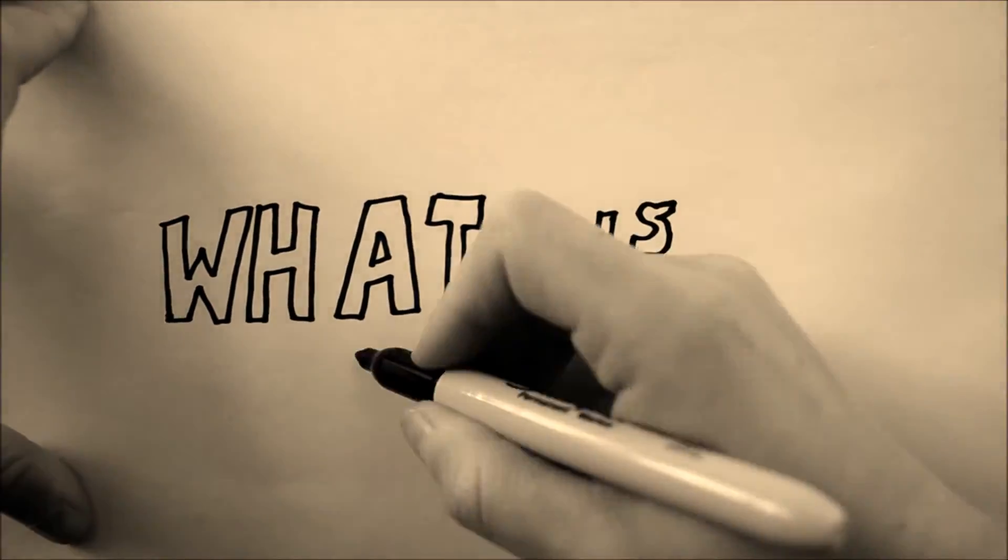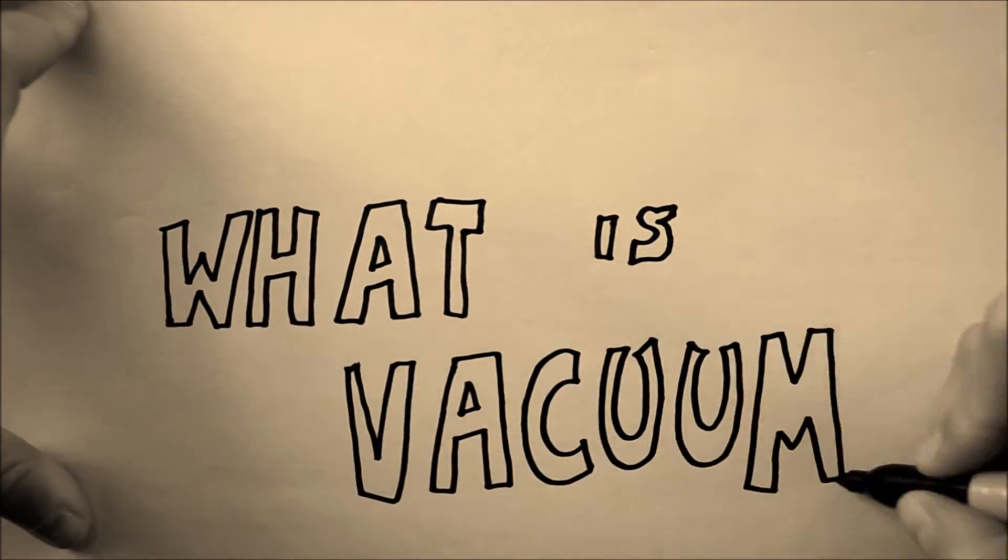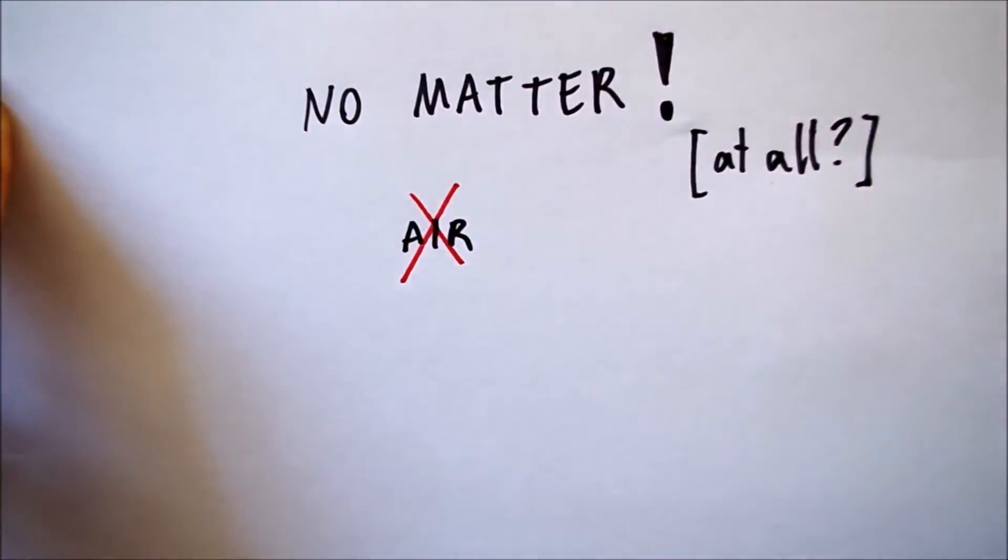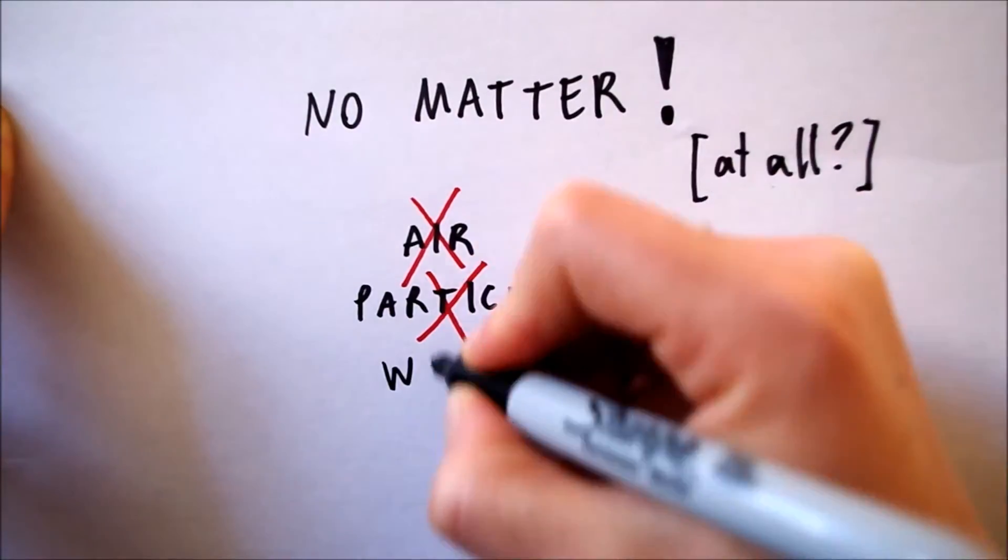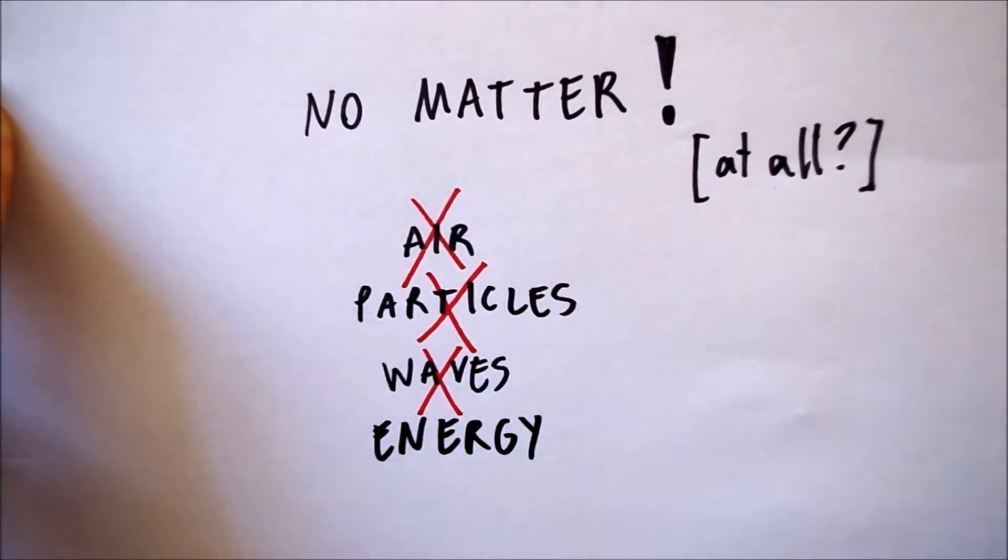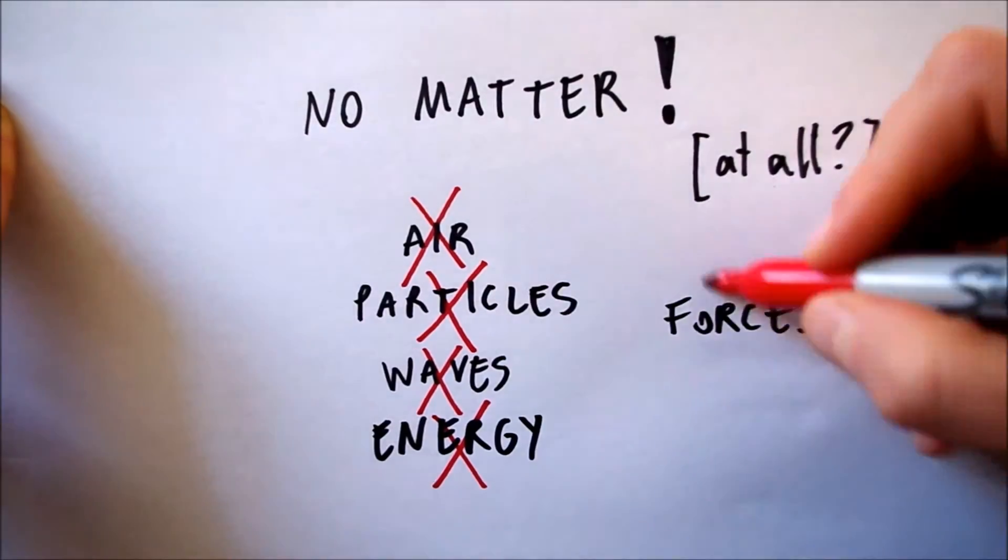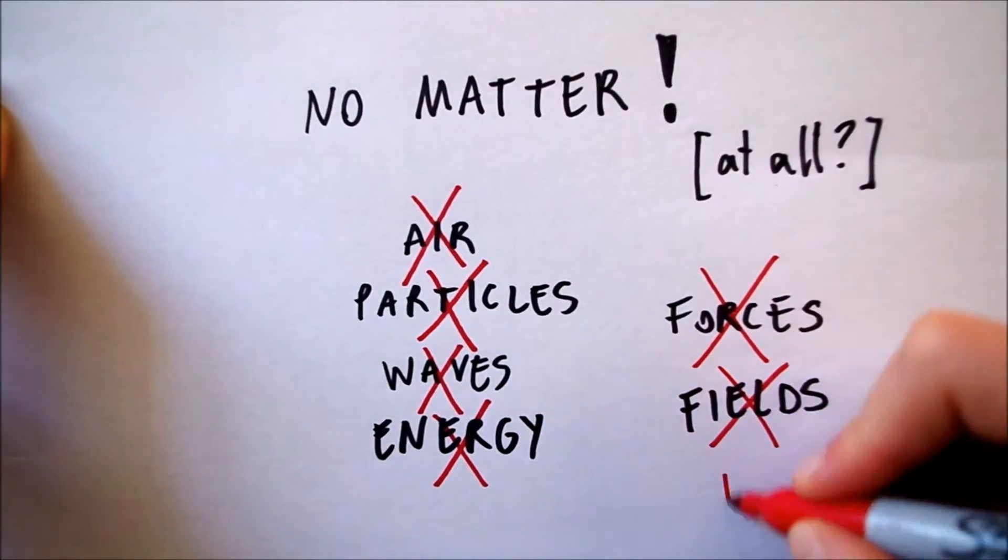To investigate whether vacuum actually exists, we need to define what vacuum is. It is what remains when all the matter is removed from a certain region of space. No air, no particles, no waves, no energy, for mass and energy are equivalent according to Einstein's equation. No forces, no fields of any kind.